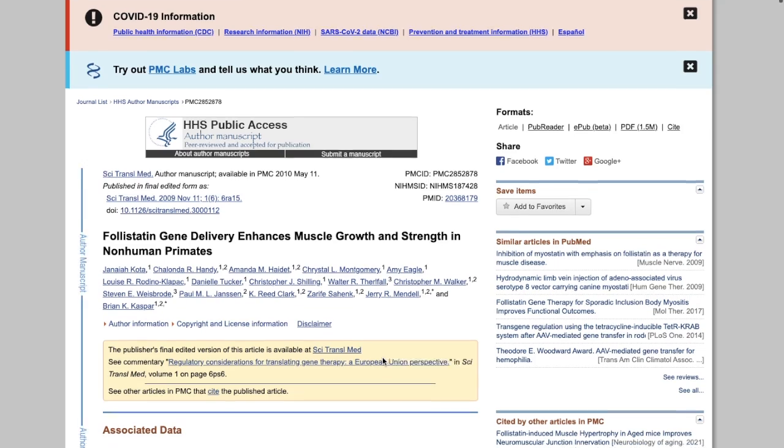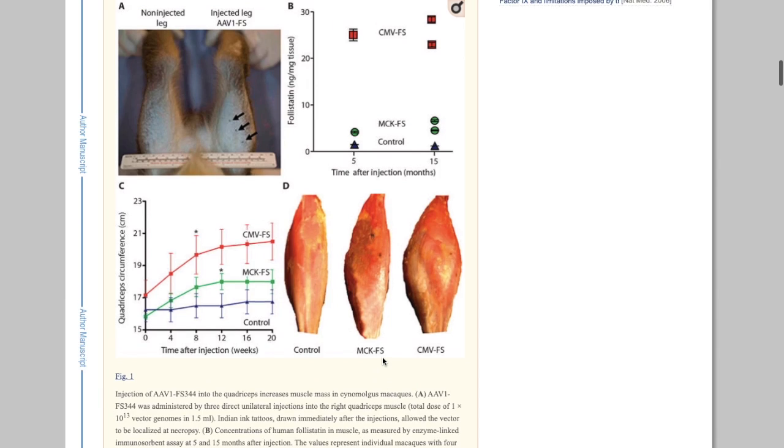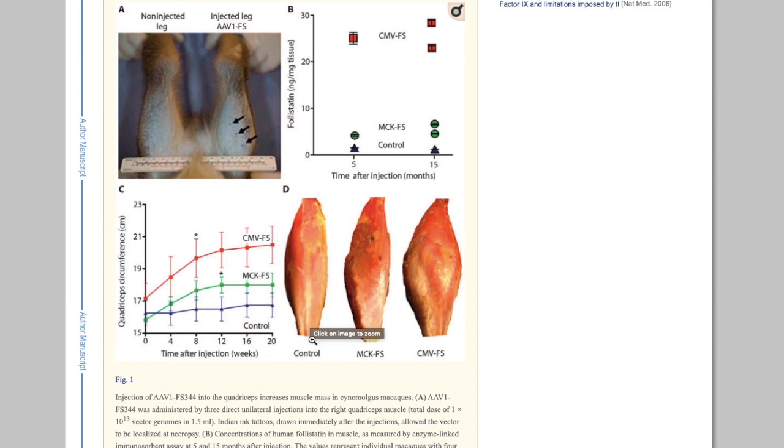Alright, so back to the study. It's called "Follistatin Gene Delivery Enhances Muscle Growth and Strength in Non-Human Primates." I'm going to put the link in the description so you guys can check it out. But long story short, here's the result. There goes the control group, you could skip the middle one—they injected it with a different virus and the middle one was trash, so let's focus on CMVFS.